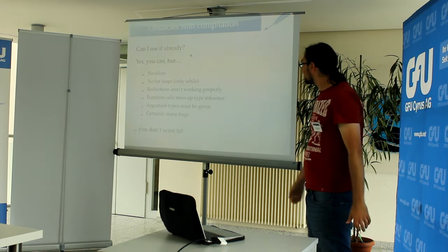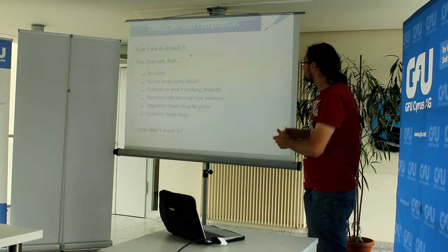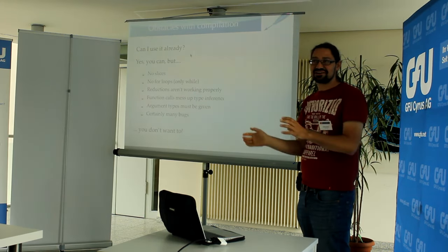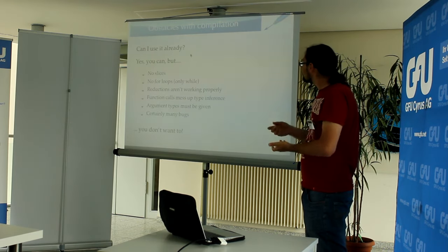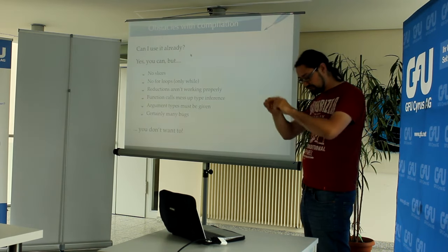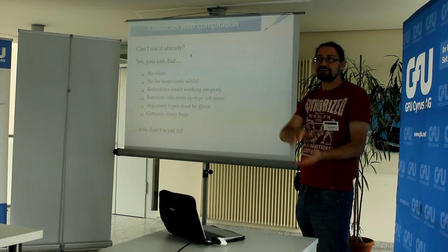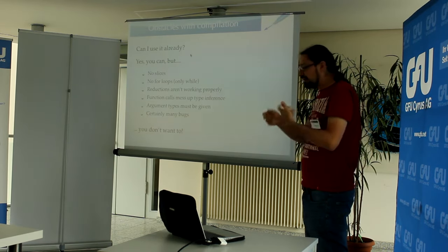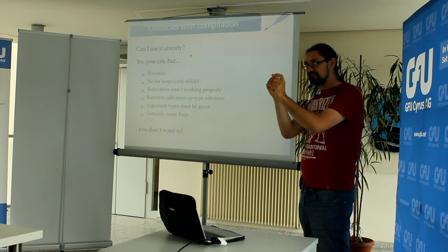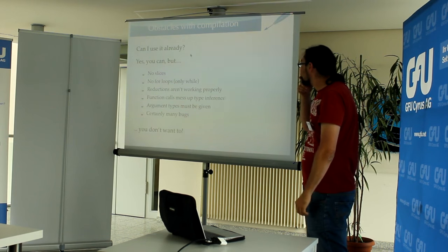Can you use that thing already? Yes, you can, but you don't want to. The language the JIT compiler supports is very restricted. At the moment, slices are not supported, which makes it unusable for most of what I've shown. There are no for loops — you can only use while for looping. Reductions aren't working properly. If you call a function, that will mess up the type inference — if you call a non-vector function, it doesn't know the return type and you lose all the advantage; it will compile but won't be faster than the pure vector version. Also you have to annotate your functions with the correct types. In the end it would work by looking up if a function is already compiled for those data types, and if not, compile it then run — but this is all not working yet, and there are surely many bugs.